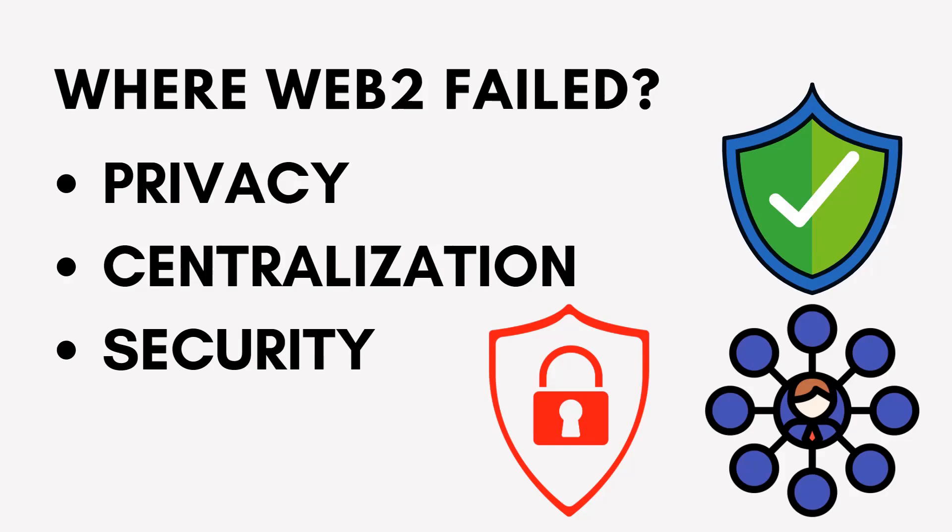There are three points where Web 2 failed. First is privacy, second is centralization, and third is security. On the centralization point: nowadays when we go to a website, we grant permissions and access regarding how our data can be used. In the name of privacy, we face a lot of problems.